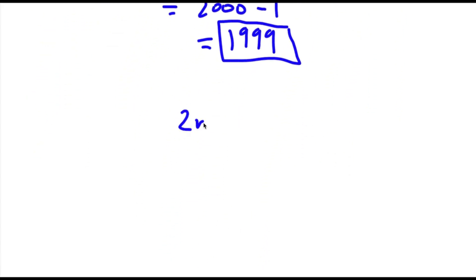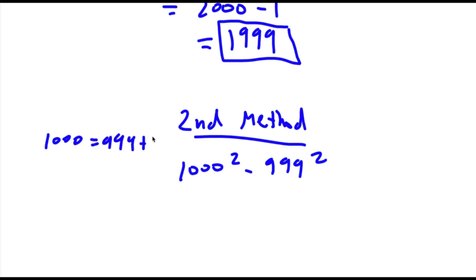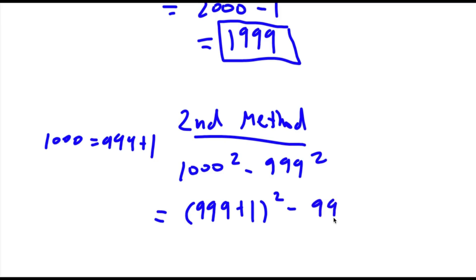Now my second method to solving this problem: we again start with 1000 squared minus 999 squared. Last time I replaced 999 with 1000 minus 1. This time I'm going to replace 1000 with 999 plus 1. So now I have (999 plus 1) squared minus 999 squared.